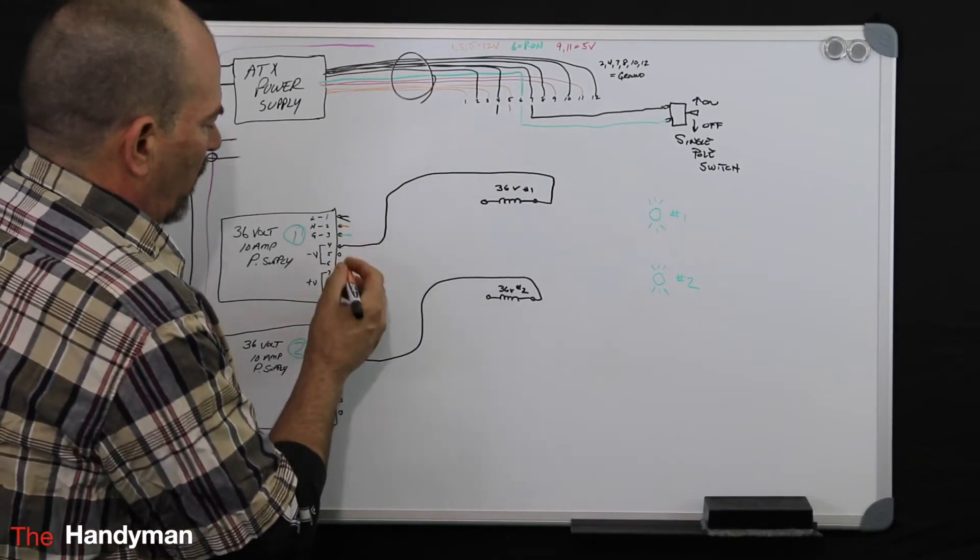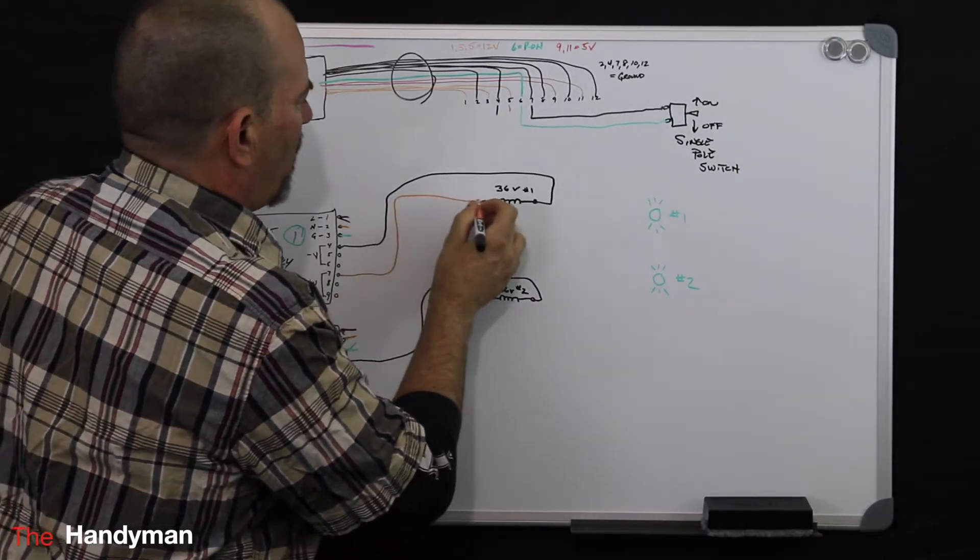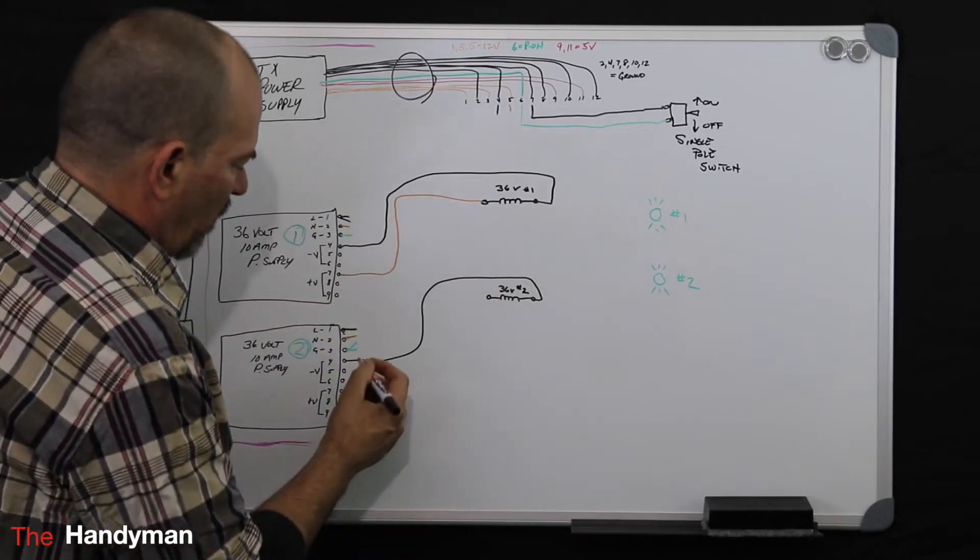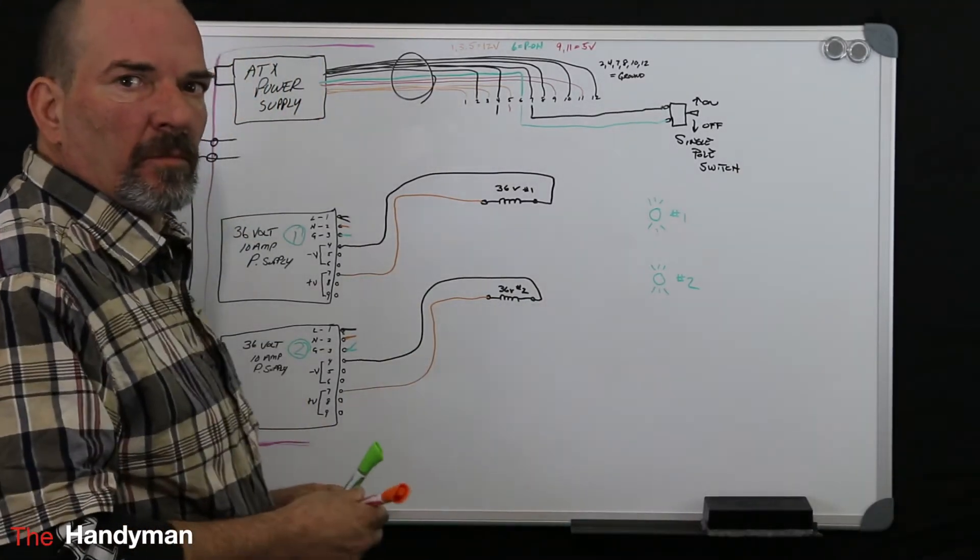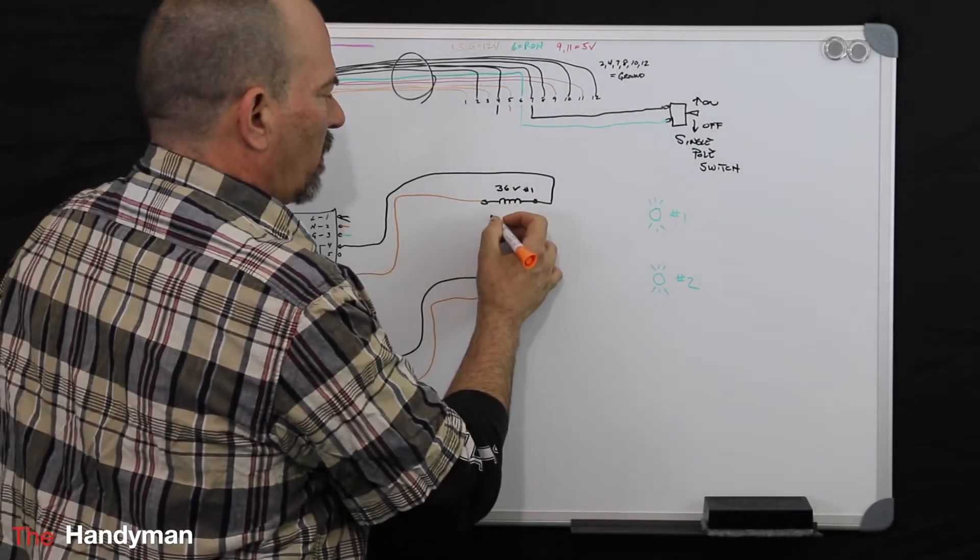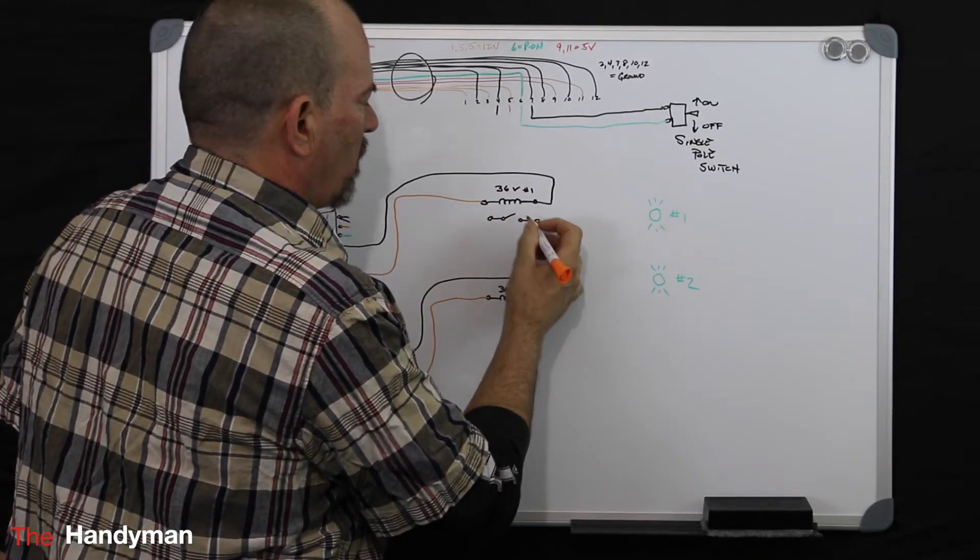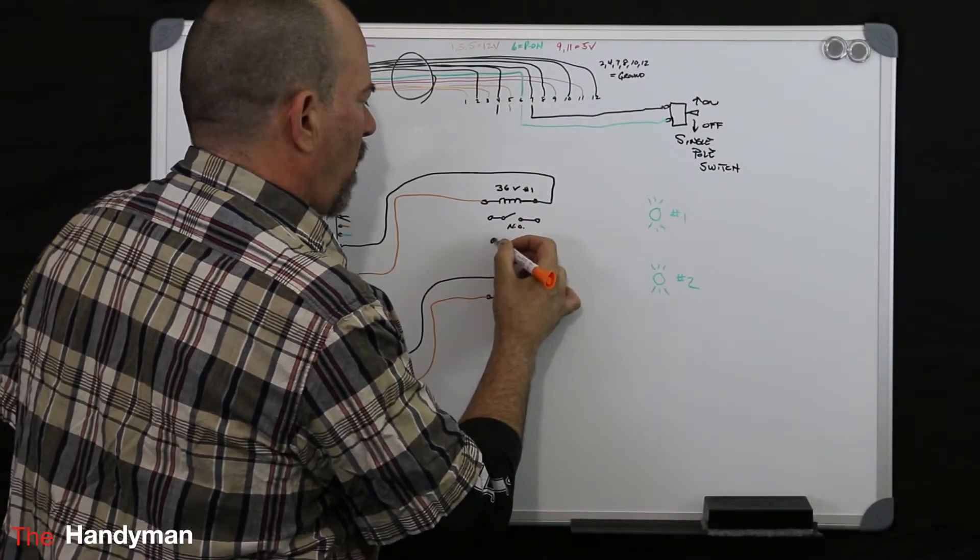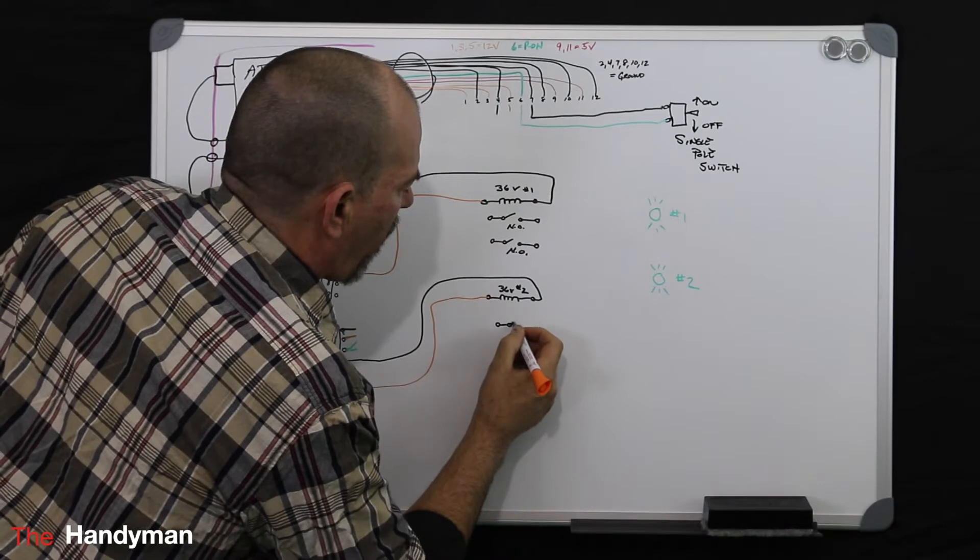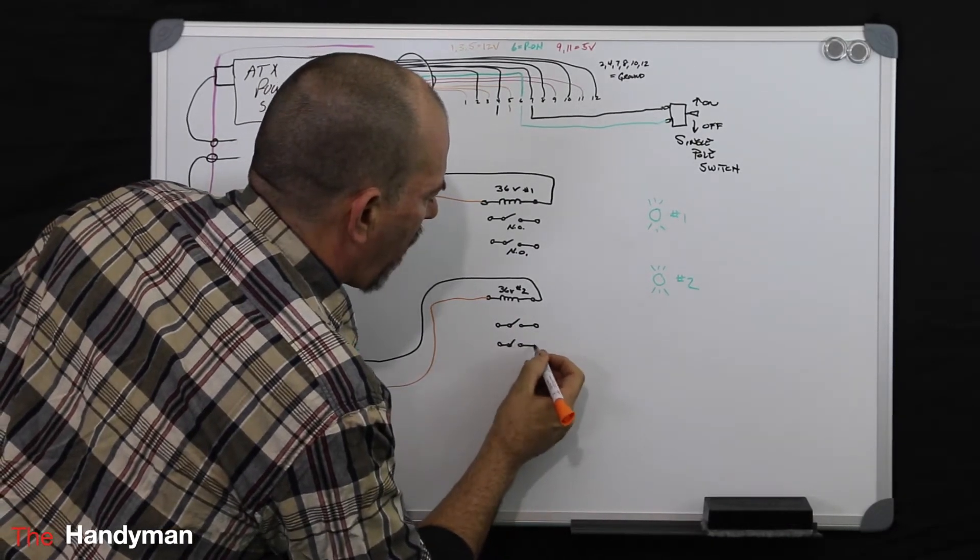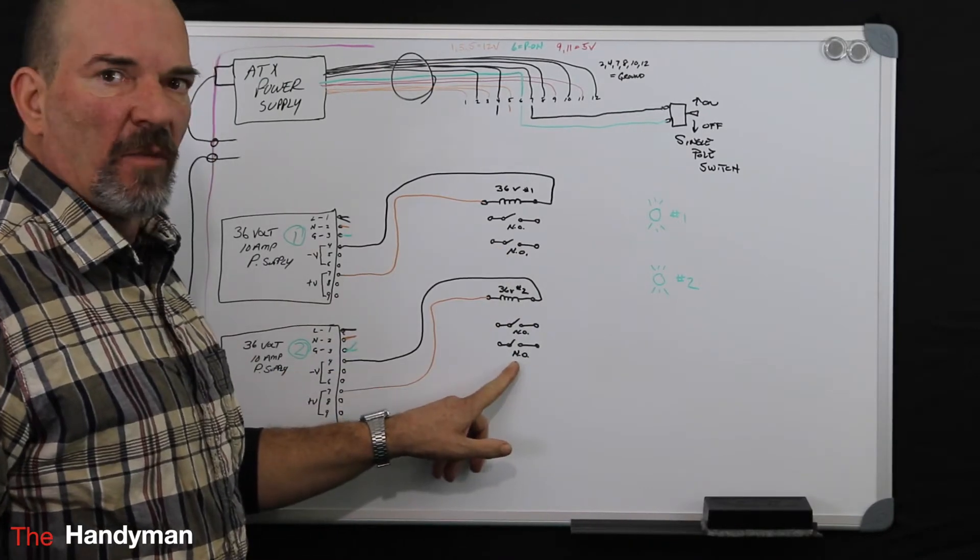So what we do here is now we take a positive from the 36 volts. We run that to the other side of our coil. And we do the same down here. Take our positive and run it to our coil. And now what we do is we've got to find two sets of normally open contacts. I'll draw these down here. Okay, now that these are drawn in, our normally open contact points, my indicator lights are 12 volt.